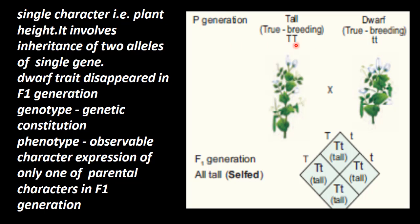This is tall. This small 't' represents dwarf or short. It involves the inheritance of two alleles. This is a single gene which represents the character of height.